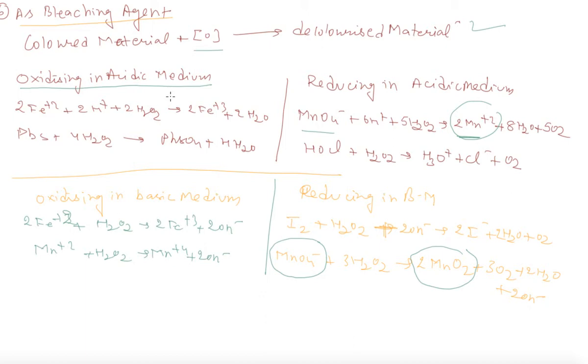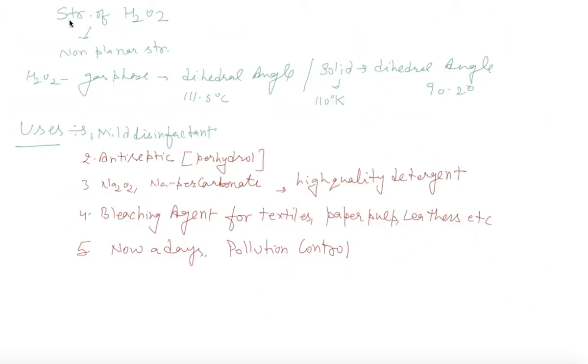Then structure of H2O2. The structure of H2O2 is non-planar. H2O2 in gas phase has a dihedral angle of 111.5 degrees. In solid at 110 Kelvin, its dihedral angle is 90.2 degrees.